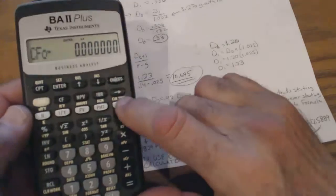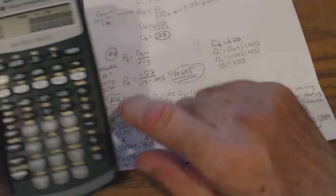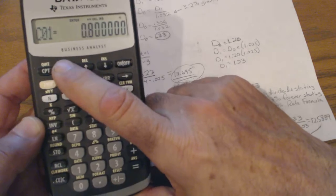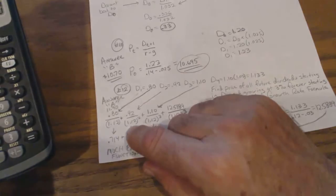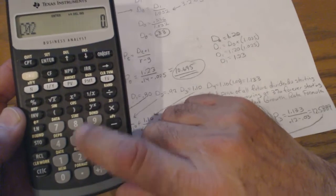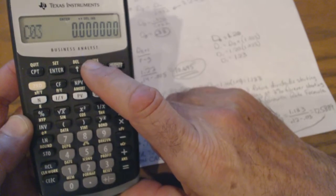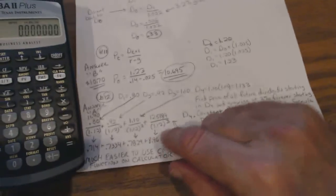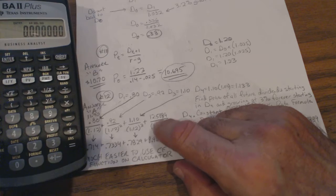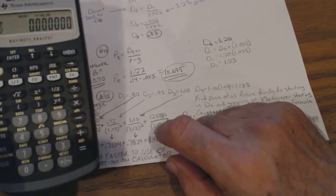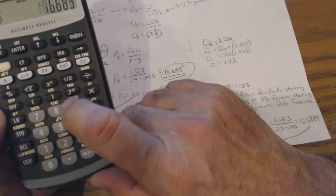Cash flow one, that's zero. Remember you only use that when you're figuring out like net present value. Cash flow one is 80 cents, so 0.8 enter. And that's for one period. Two is 0.92, 92 cents, 0.92 enter, down and down again. Cash flow three, now this is where you add these two together, a buck 10 plus 12.5889, so that's 13.6889. So 13 dollars, 0.6889 enter.